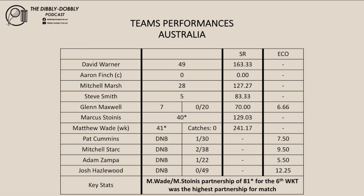Let's have a look at Australia's team performance with both bat and ball in this second semi-final against Pakistan. Starting with their batsmen: Warner 49, Finch 0, Marsh 28, Smith 5, Maxwell 7, Stoinis 40 not out, and Wade 41 not out. That's how the batsmen performed for Australia in this second semi-final against Pakistan.